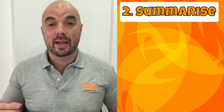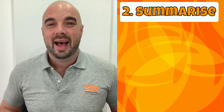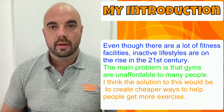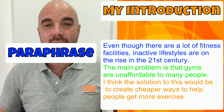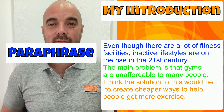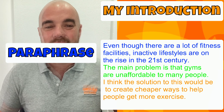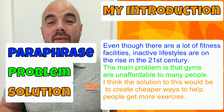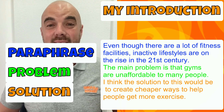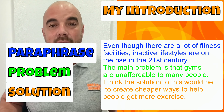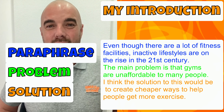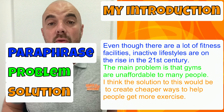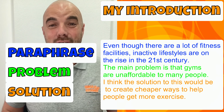So now we put our paraphrase statement, our summary of the problem, and a quick summary of the solution all together, and it will look something like this: 'Even though there are a lot of fitness facilities, inactive lifestyles are on the rise in the 21st century. The main problem is that gyms are unaffordable to many people. I think the solution to this would be to create cheaper ways for people to get exercise.' This is about 48 words, which leaves you over 200 to write your two body paragraphs and your conclusion.